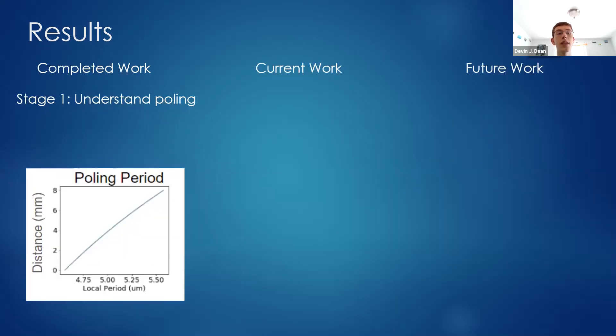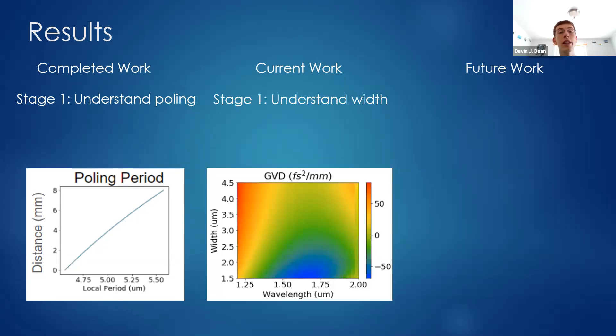Just to summarize where my work stands, I've varied poling and observed the results and tried to gain intuition for that parameter. I'm currently working to understand how width affects the dispersion of the waveguide. Shown here is a plot of dispersion, which has to do with how different colors travel at different speeds within the waveguide.